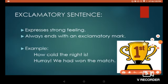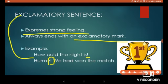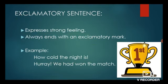An exclamatory sentence always ends with an exclamation mark and it expresses strong feeling. For example: 'How cold a night it is!' expresses strong feeling and ends with an exclamation mark. In 'Hooray! We won the match,' the exclamation mark is in the middle, but it is still an exclamatory sentence because it expresses strong feeling.